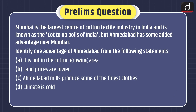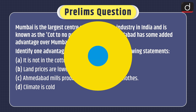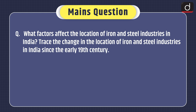Now it's time for practice questions. Prelims question: Mumbai is the largest center of cotton textile industry in India and is known as the cottonopolis of India, but Ahmedabad has some added advantages over Mumbai. Identify one advantage of Ahmedabad: it is not in the cotton growing area; land prices are lower; Ahmedabad mills produce some of the finest clothes; or climate is good. Mains question: What factors affect the location of iron and steel industries in India? Trace the change in the location of iron and steel industries in India since the early 19th century. That's all for today — stay tuned for the next episode. Thanks for watching.